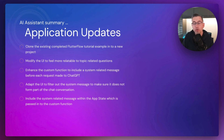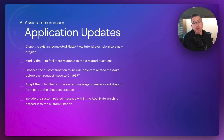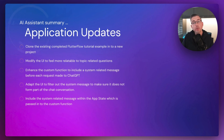We're going to enhance the custom function to include a system-related message before each request — this is the key change. By doing that, you keep the conversation on topic with the ChatGPT platform. We'll also adapt the UI to filter out these system messages, because we'll be sending them on every request but we don't want to see them in the FlutterFlow UI. The initial script goes into the app state so you can customize it — we'll also turn it into something like a fashion designer to show you the output.